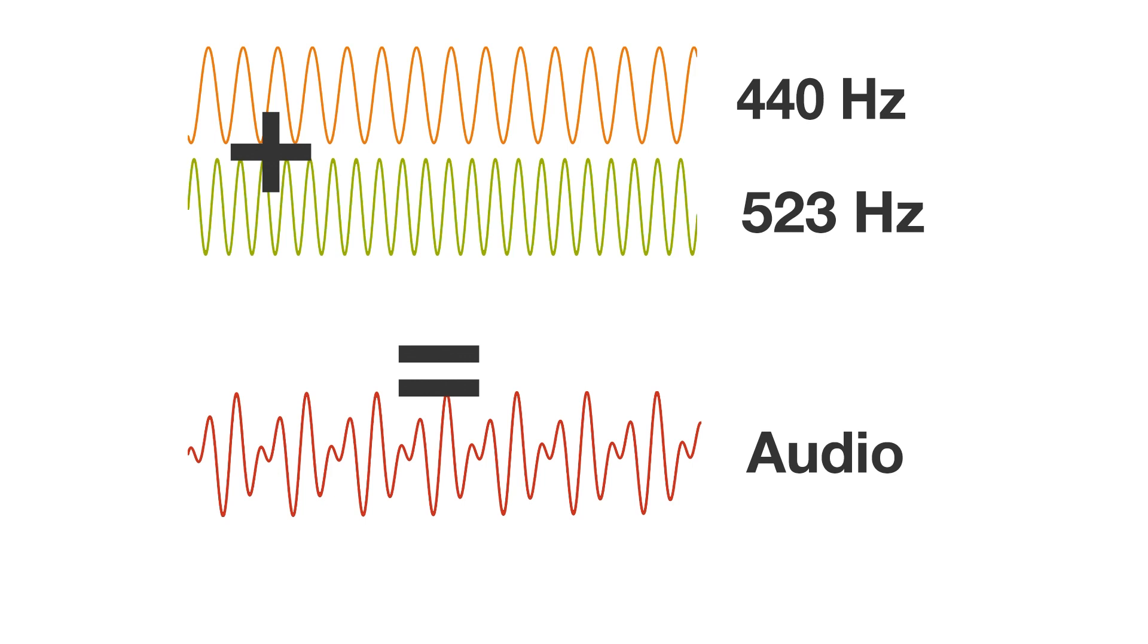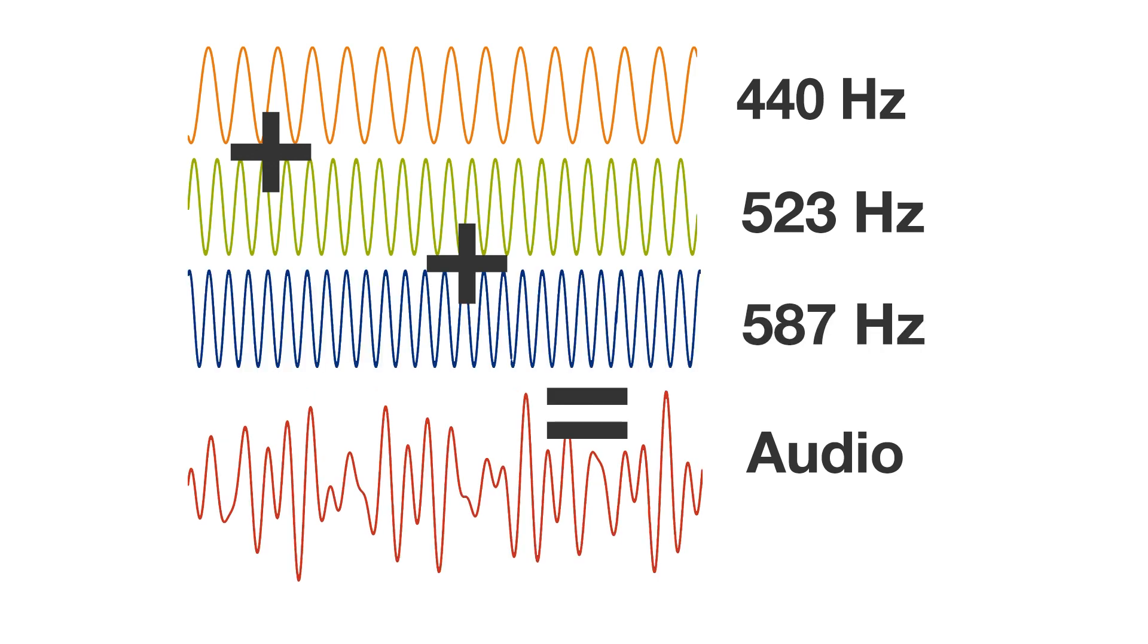This means that sometimes both sounds add up resulting in a higher amplitude, while at other times the sounds tend to cancel out. The result is a near random looking signal that makes no sense whatsoever. It will even get worse as soon as we add more frequencies. For example, let's add 587 hertz. Take a look.